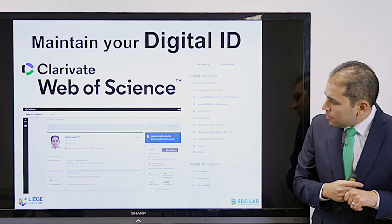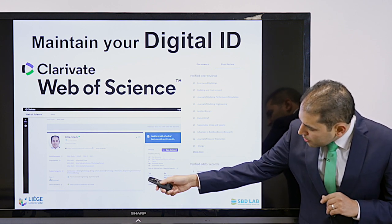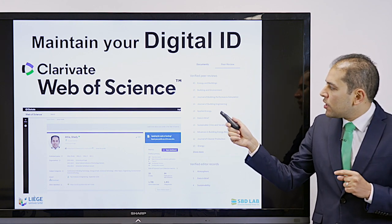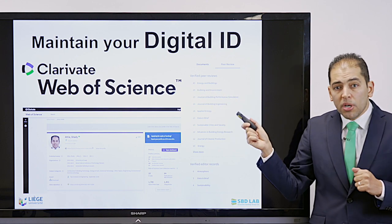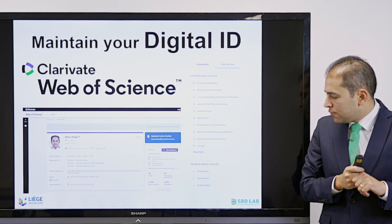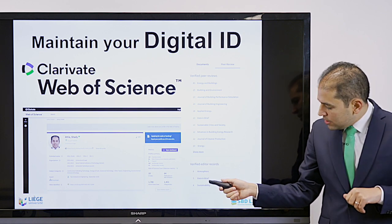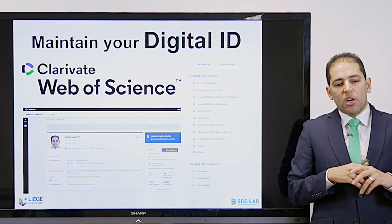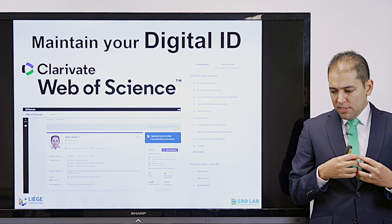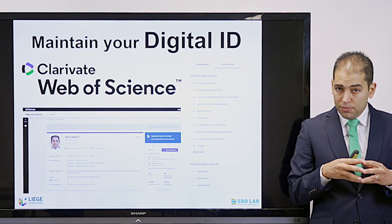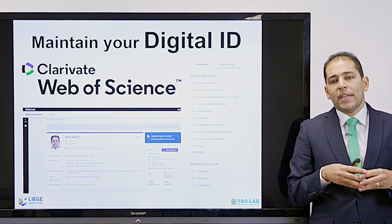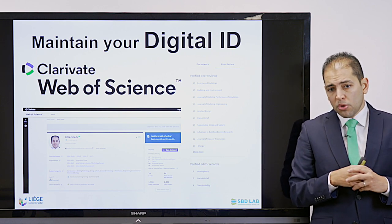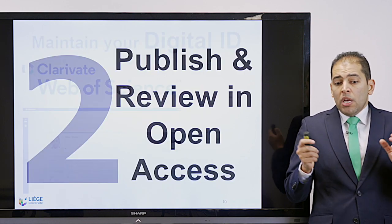Another important platform is Web of Science — I strongly advise you to make a profile there. On Web of Science you can have a record of your publications, your reviews, editing roles, and even grant reviewing activities. As you can see here, I have several examples — for every journal I reviewed there is a number showing how many times I reviewed for it, and there are verified editor records too. Web of Science is very powerful and is used by selection committees and for promotions.